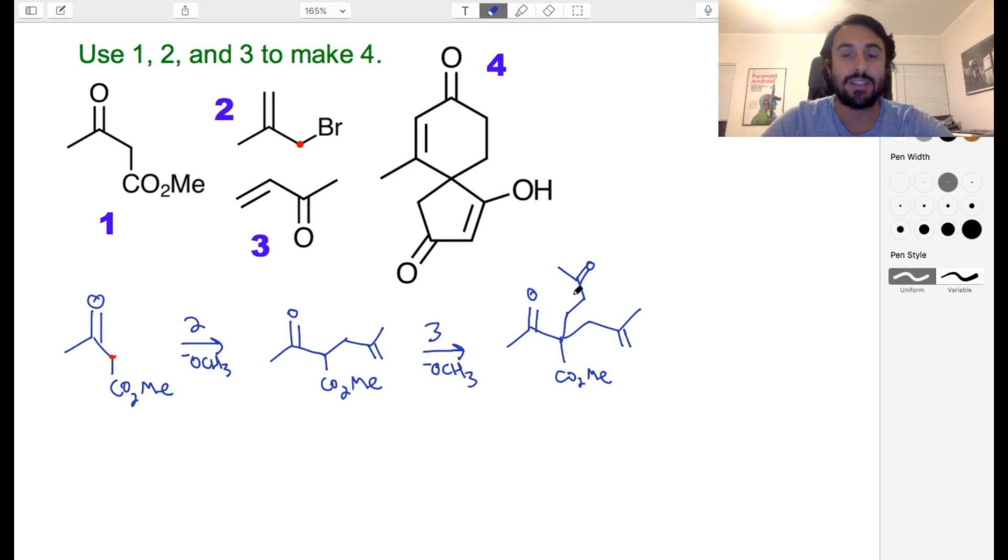Let's do some intramolecular enolate chemistry - let's do an intramolecular aldol condensation. Where do we think we're going to be able to pull this off? Well, we've got a carbonyl here and we've got a carbonyl here and we have the potential to make a six-membered ring: one, two, three, four, five, six.